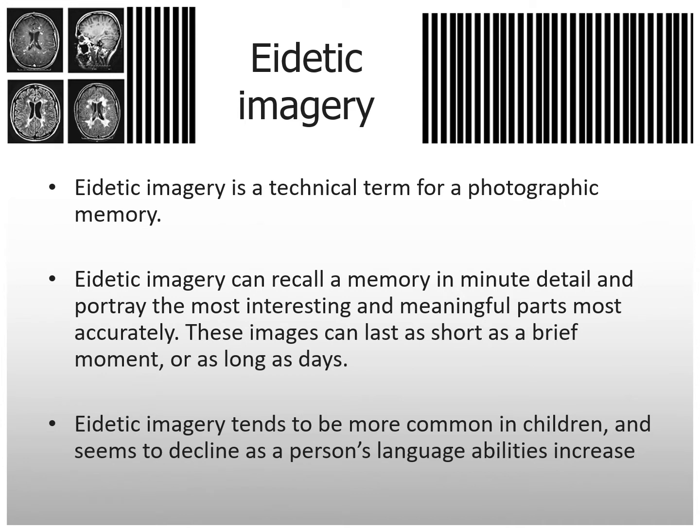Eidetic imagery can recall a memory in minute detail and portray the most interesting and meaningful parts most accurately. These images can last as short as a brief moment or as long as days. Eidetic imagery tends to be more common in children and seems to decline as a person's language abilities increase. Children who don't have as big a vocabulary tend to see things more in pictures.